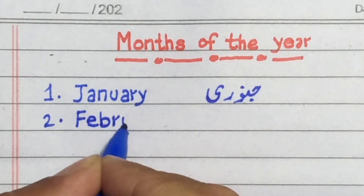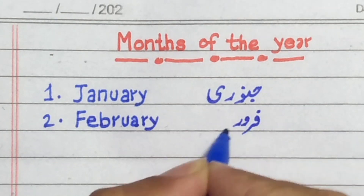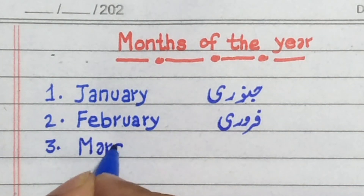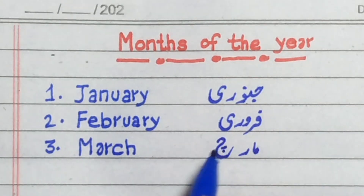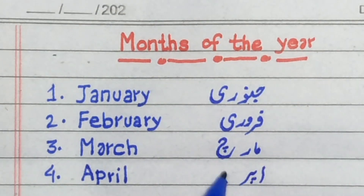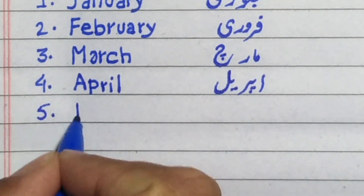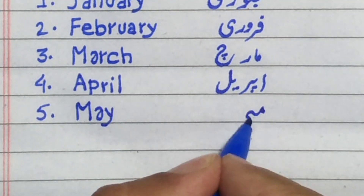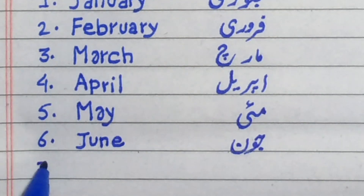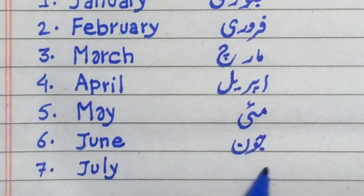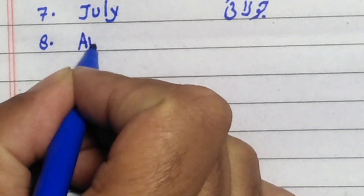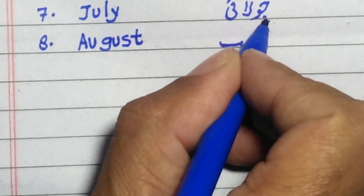Number two is February. February. Number three is March. March. Number four is April. Number five is May. May. Number six is June. June. Number seven is July. Number eight is August. August.